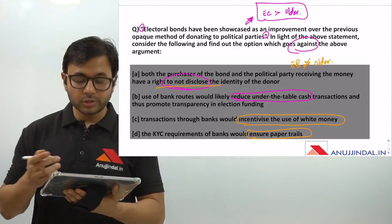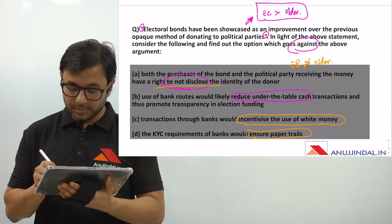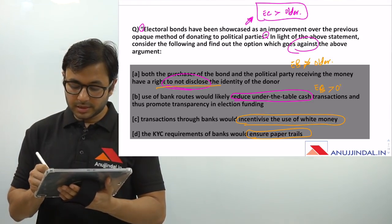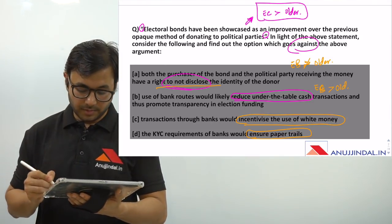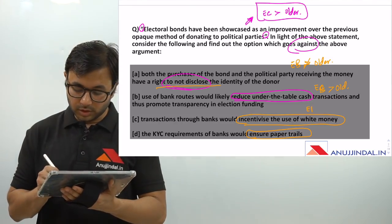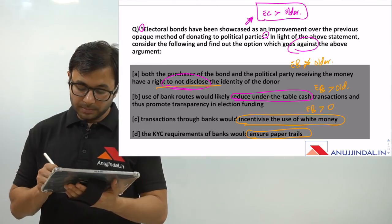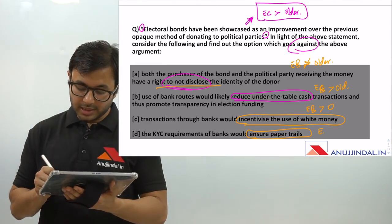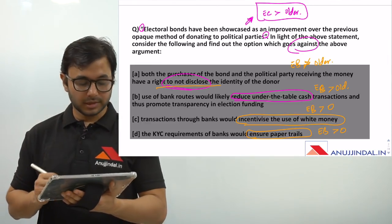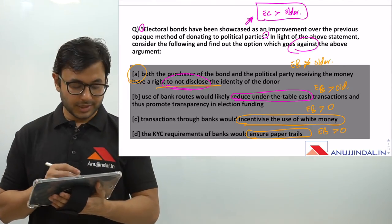The second option says it reduces under-the-table cash transactions, which proves electoral bonds are better than the older method. Option 3 says incentivize the use of white money — again, electoral bonds are better. And the fourth says ensure paper trails — again, electoral bonds are better than the older method.